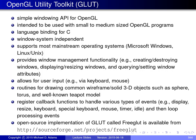GLUT is basically a simple windowing API for use with OpenGL, intended to be used with small to medium sized OpenGL programs. If you're writing a really complicated graphics application you probably wouldn't want to use GLUT, because it's very simple and doesn't provide very rich functionality. The language binding for GLUT is C, it's window system independent, and it supports most mainstream operating systems including Microsoft Windows, Linux, Unix, and Mac OS X.